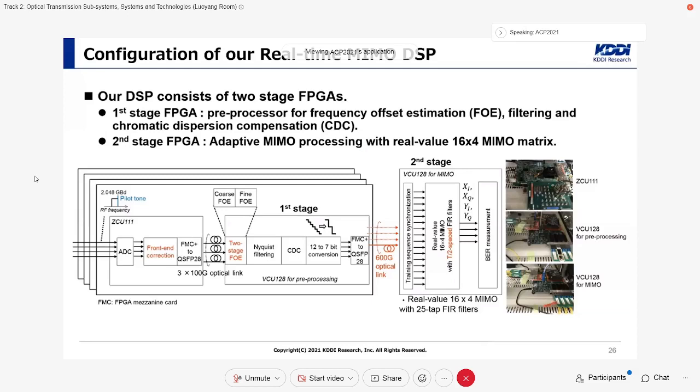Then, the data were sent to the first stage FPGA by optical transceivers. In the first stage FPGA, as a pre-processor, a frequency pilot tone based frequency offset estimation, filtering, and chromatic dispersion compensation were performed.